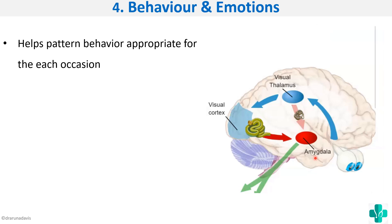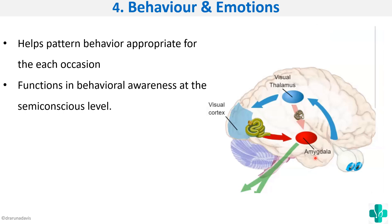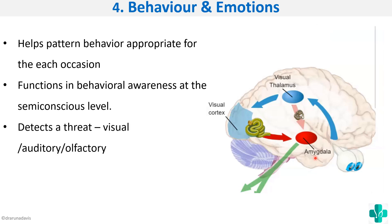The limbic system detects a threat — whether visual, auditory, or olfactory — and triggers a fear response. Emotion is a complex feeling state with psychic, somatic, and behavioral components related to mood and affect. Cognition means awareness of a sensation and its cause; affect is the feeling itself; and cognition also involves the urge to take action. Physical components include stimulation of the sympathetic system, increased heart rate, and sweating.